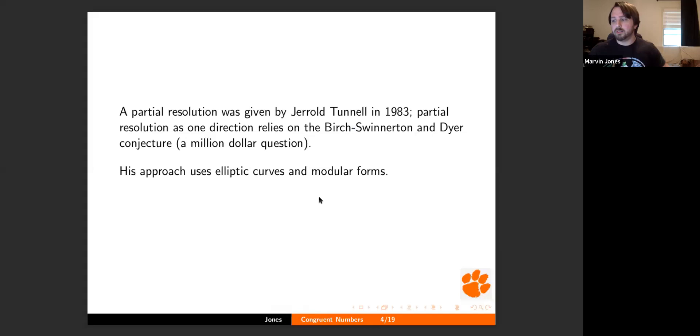Yeah, it should be Birch and Swinnerton-Dyer. So Swinnerton-Dyer should be hyphenated and the N should be... English is commutative, by the way. That's the most important life fact. But Tunnel relies on that, which is a million-dollar question. So if you want a million dollars, go prove it in the positive and make a lot of number theorists happy.